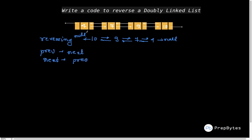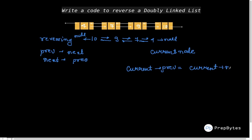Let's say I have to reverse the links of node 4. I want the prev of 4 to act as next, and the next of 4 to act as prev. I call node 4 as 'current'. What we do is: current.prev = current.next — so we are making the prev of current point to the next of current. Then we do current.next = previous of current.